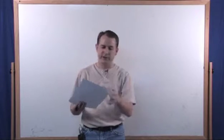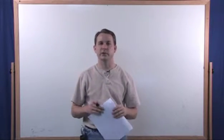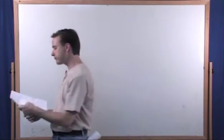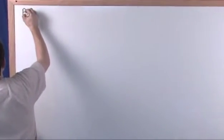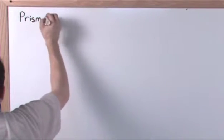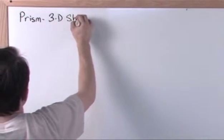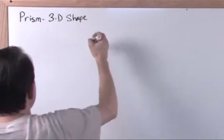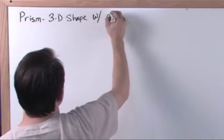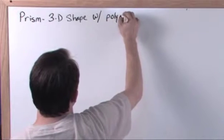So let's go ahead and draw some pictures and work some problems and talk about this a little more and I think it will be pretty clear. First we want to define one term that we've talked about before. We're going to do it again. Prism. It's a 3D shape with a polygon as a base.